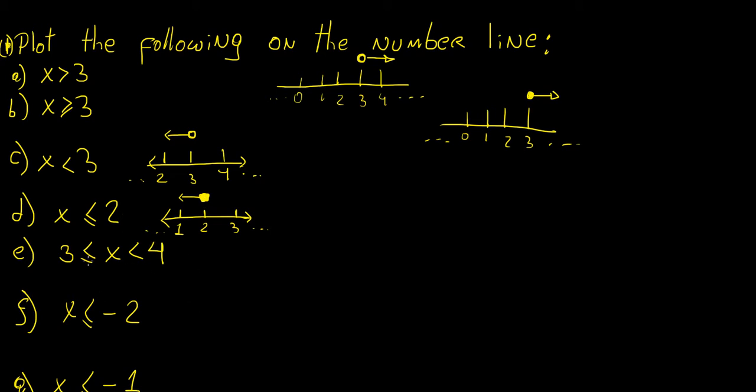Now this one is a little more interesting because x is greater than or equal to 3. Let's draw that number line - we have 3 here, 2, 4. So x is greater than or equal to 3, which means it's somewhere here or equal to 3. So basically, it's going like this.